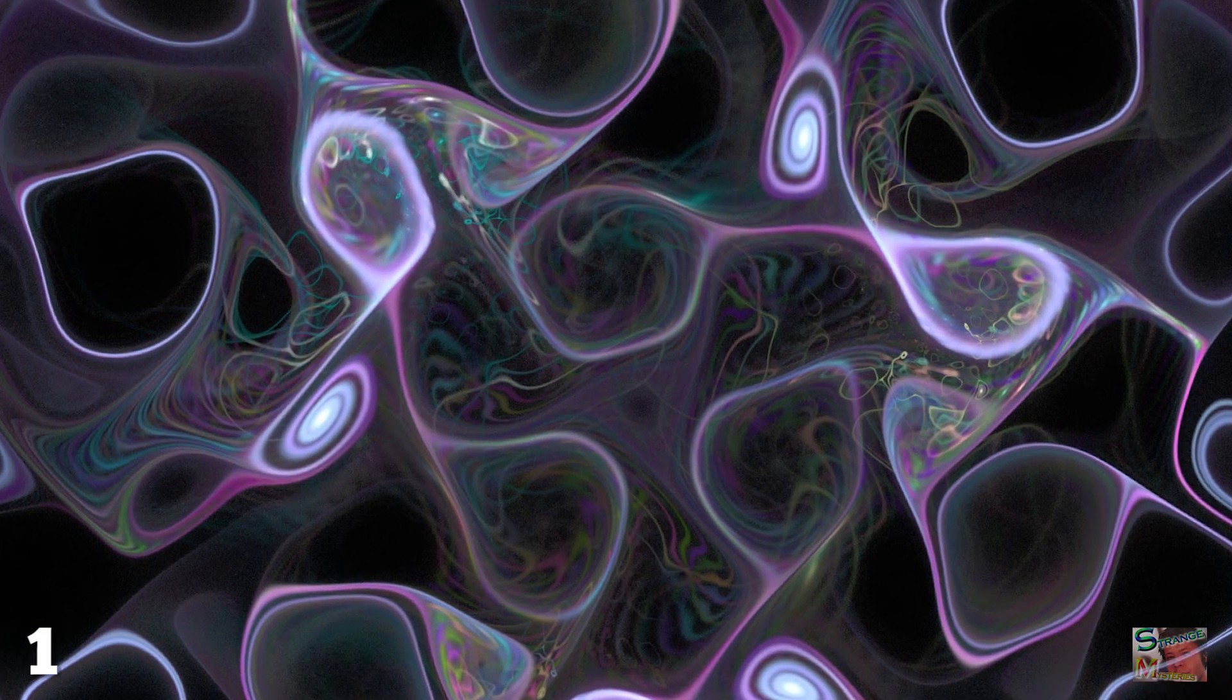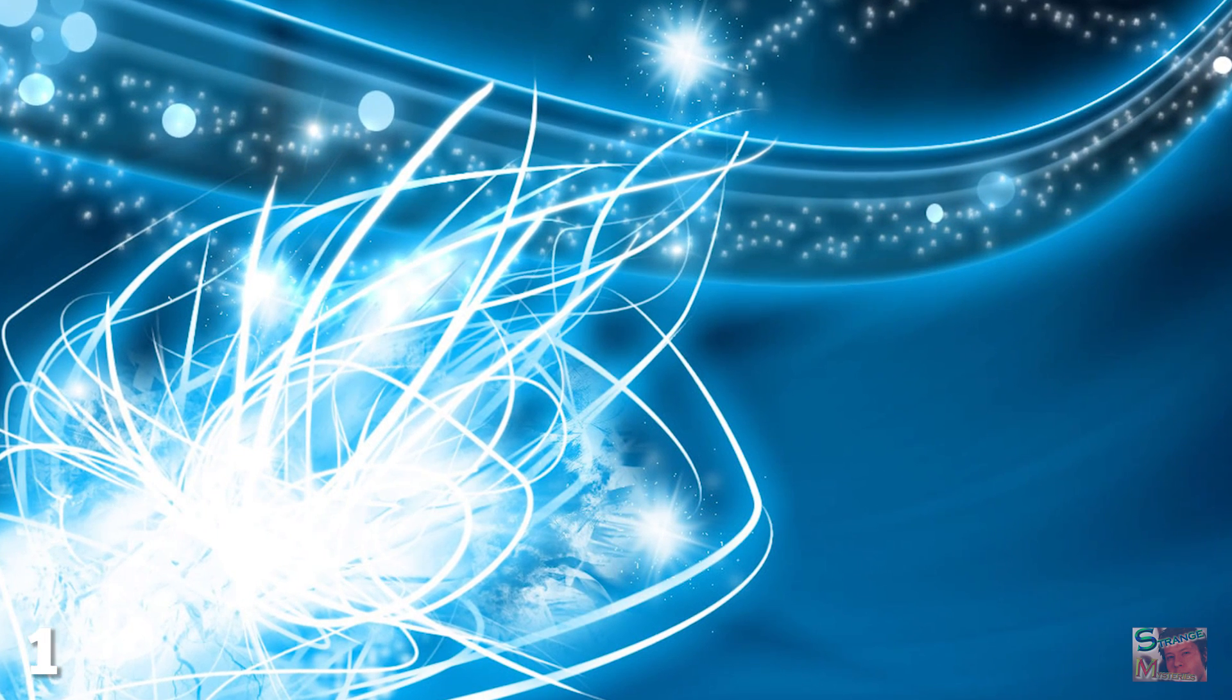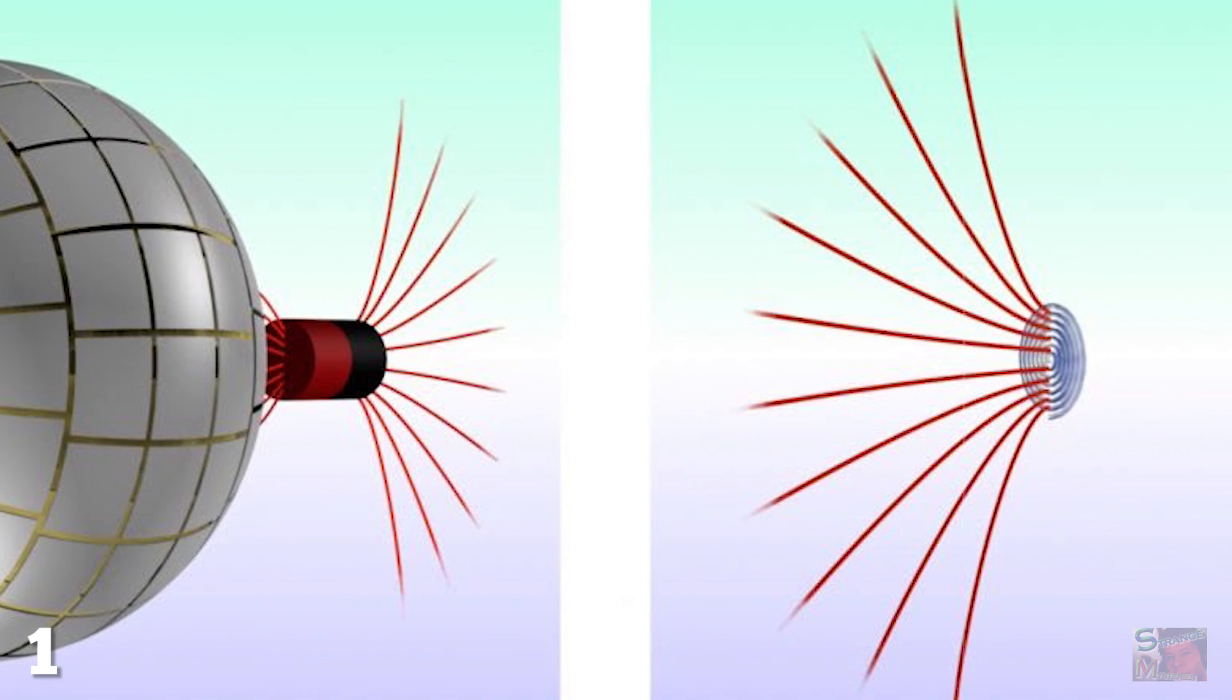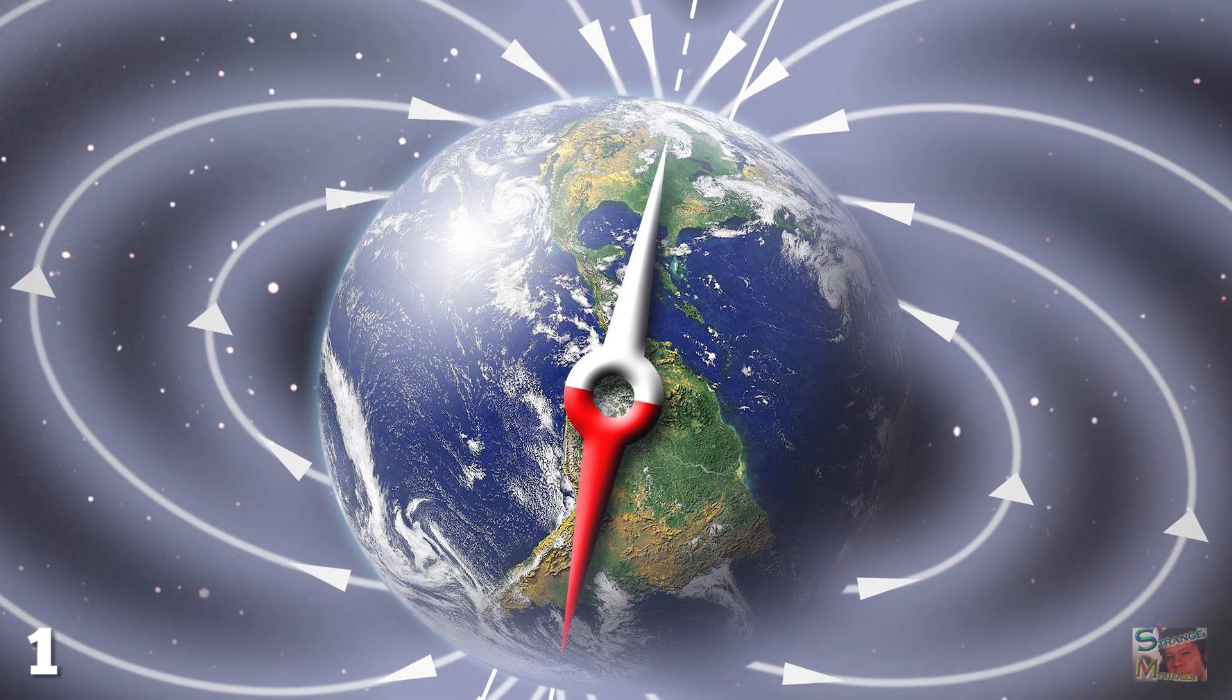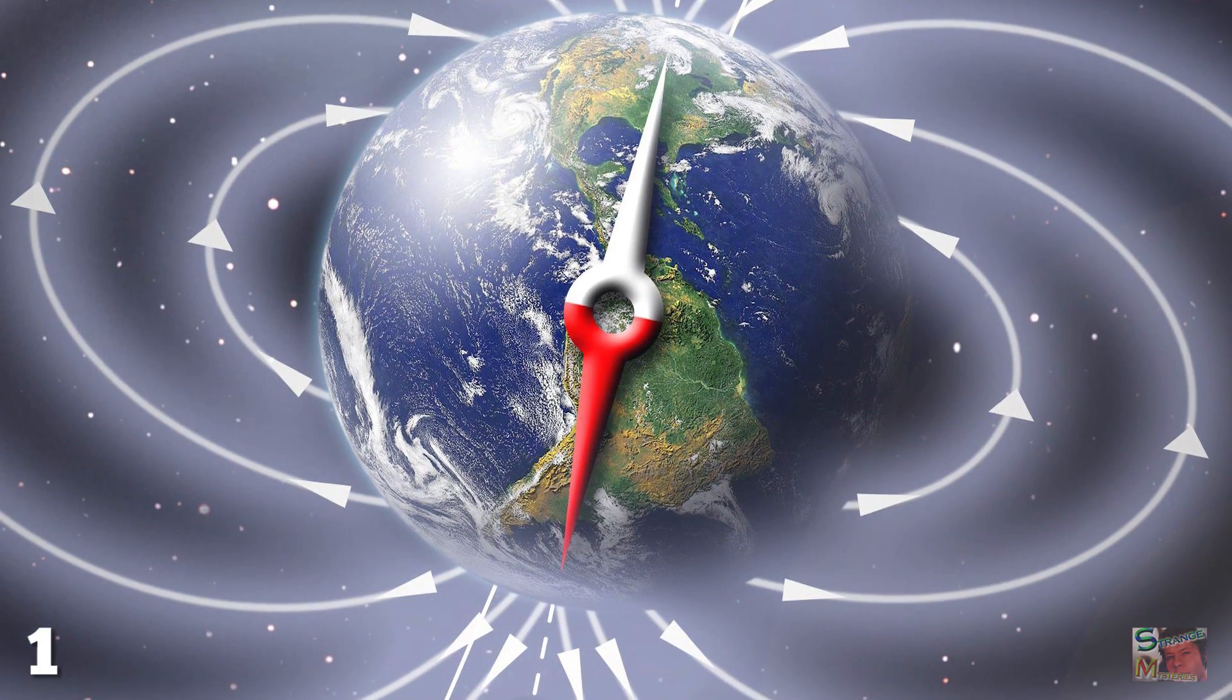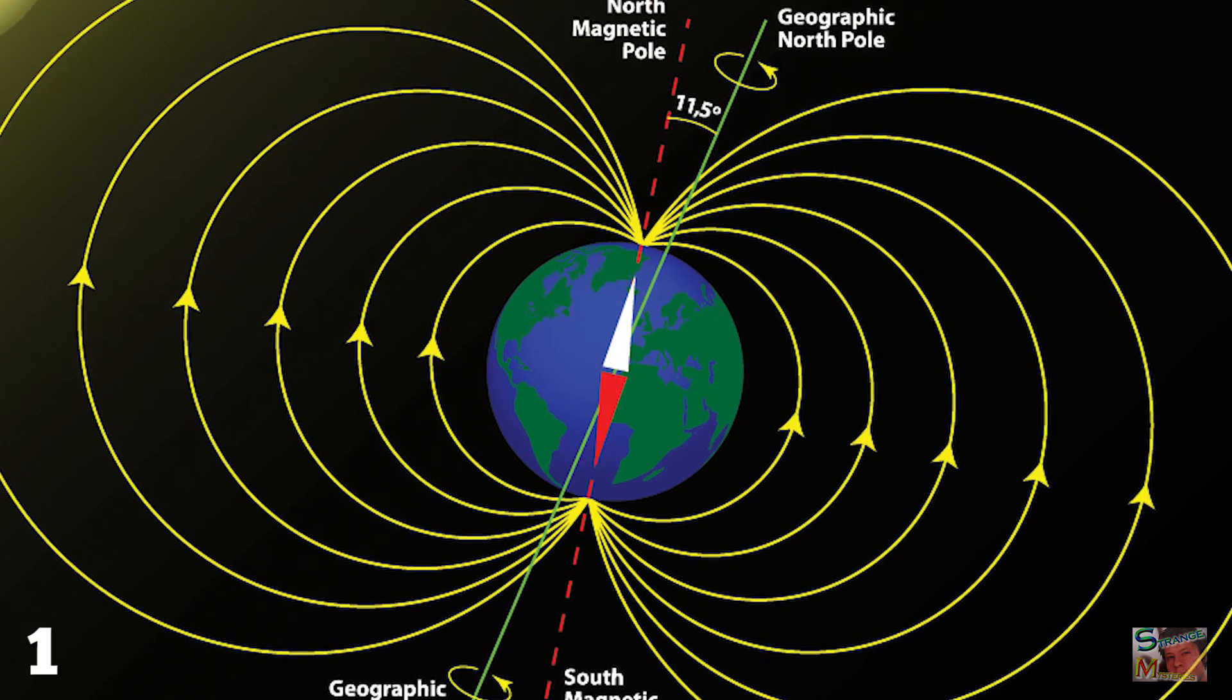Tiny wormholes might exist in something called quantum foam, with these fellas also requiring lots of negative matter to blow them up to a useful size. And also, remember the magnetic wormhole from the first entry? Well, we've discovered some of these existing naturally in Earth's own magnetic field, albeit only temporarily, since they open and close thousands of times a day.